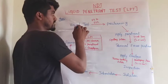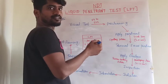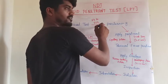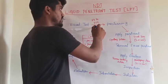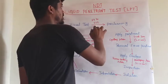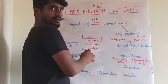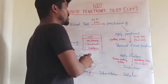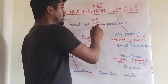The first step is the visual test. After the welding process is carried out, we have to check with our naked eyes. The temperature of the welded metal should be between 5 degrees Celsius and 52 degrees Celsius before continuing the LPT testing method. When the temperature exceeds this range, we cannot use the three chemicals, as their properties vary with temperature.